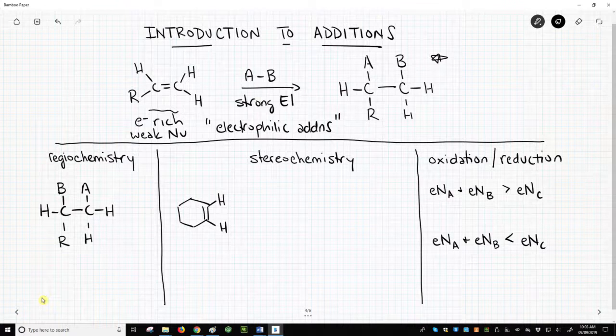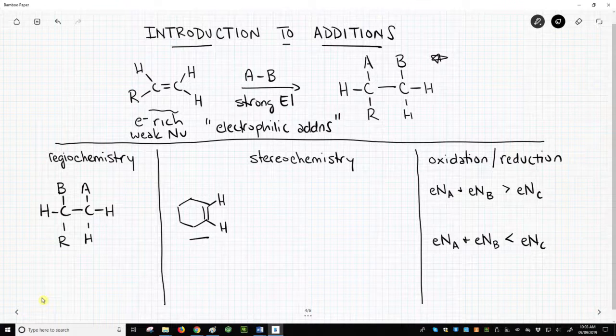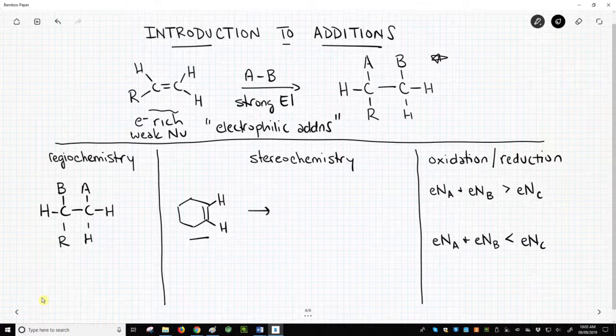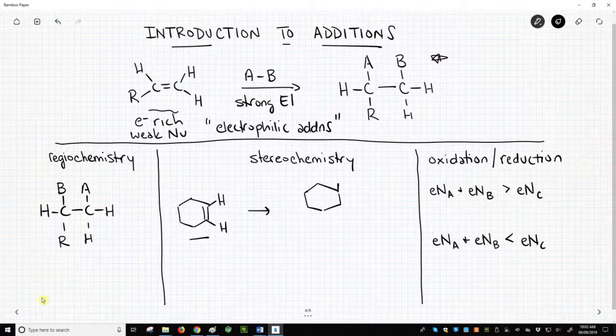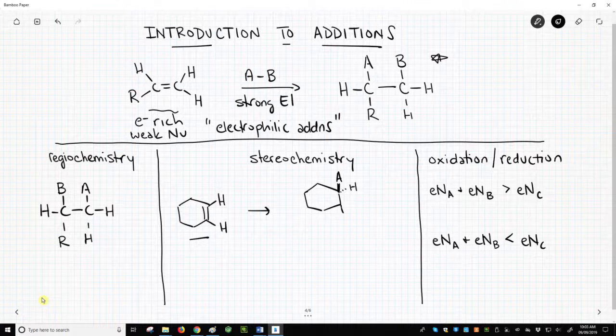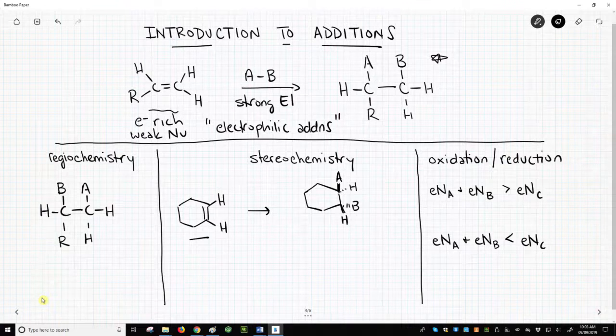Another factor is stereochemistry. Let's look at a different alkene, cyclohexene. In our hypothetical reaction with AB, cyclohexene could form two different products. Here is one. And here is the other.